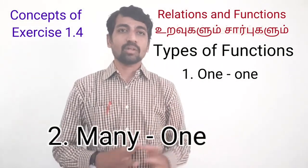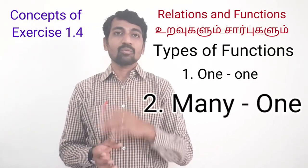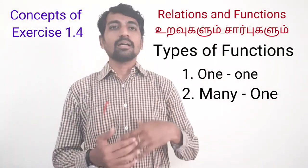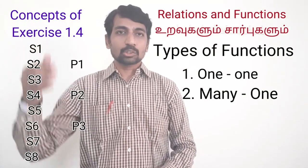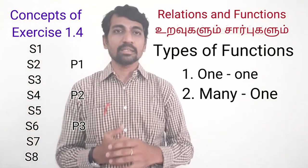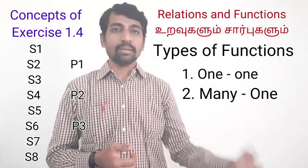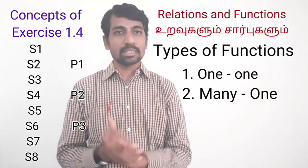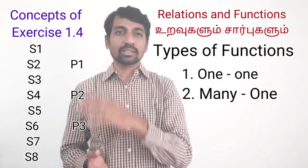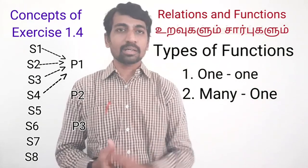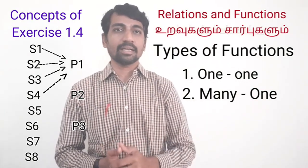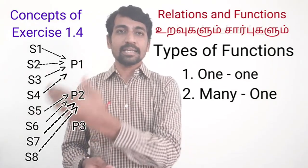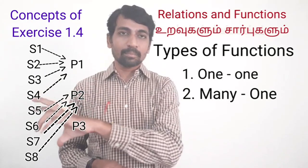The second type is the many-to-one function. Many-to-one means more than one value from set A is mapped to the same value of set B. A practical example: set A is a student list with S1, S2, S3, S4, and set B is projects P1, P2, P3. If students S1, S2, S3, S4 all choose project 1, they all connect to P1. Similarly, students S5, S6, S7, S8 connect to P2 — so many students map to one project.